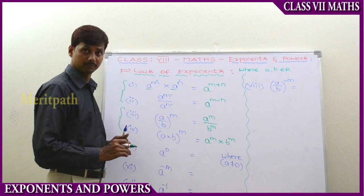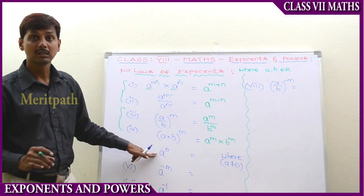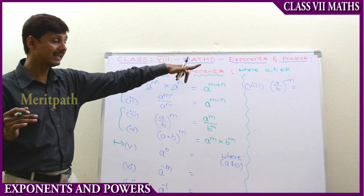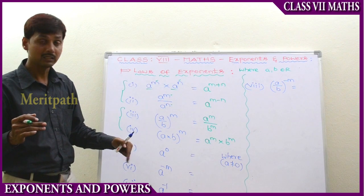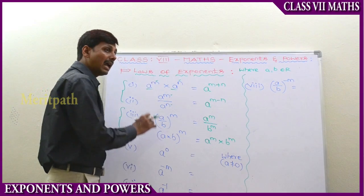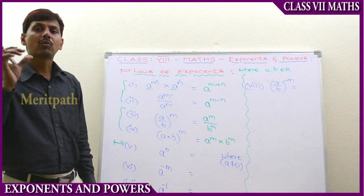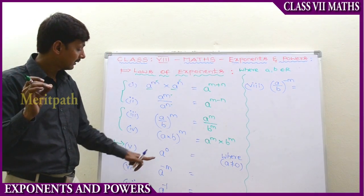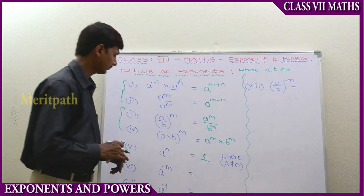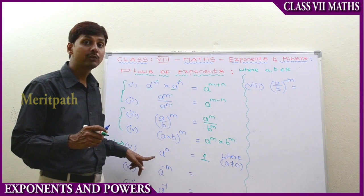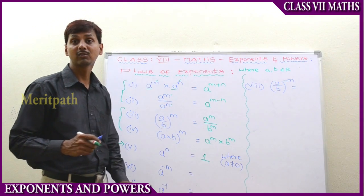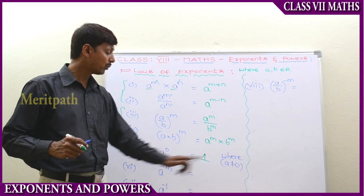When a to the power of 0: when the base is a non-zero real number — that is, a is not equal to 0 — any non-zero real number raised to the power of 0 is equal to 1. So a to the power of 0 equals 1.